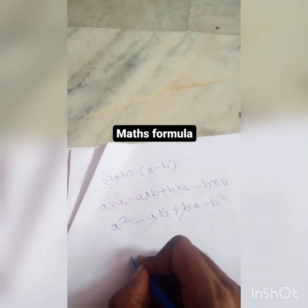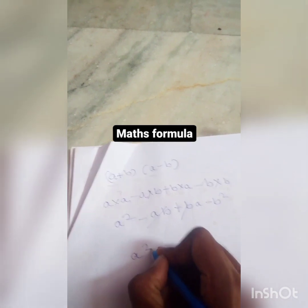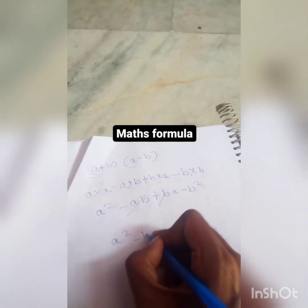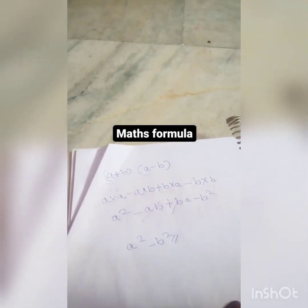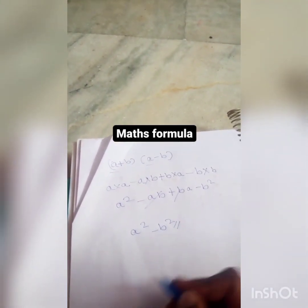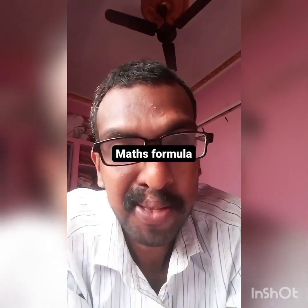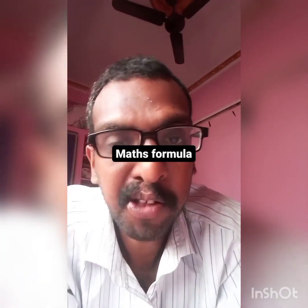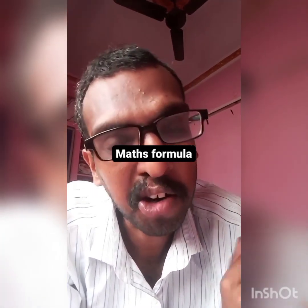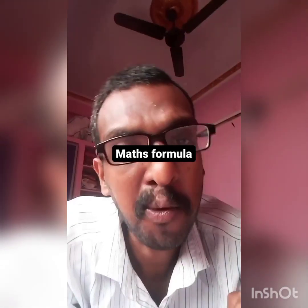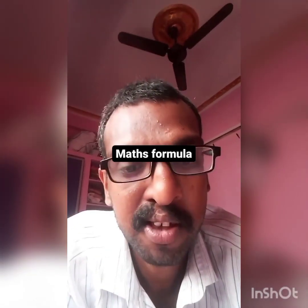This is a squared minus b squared. Next, I will show you a shortcut.